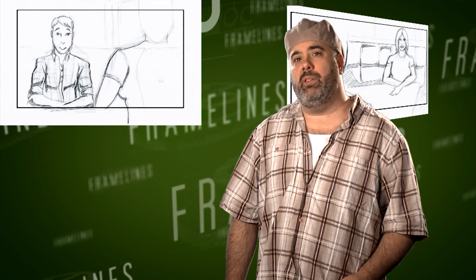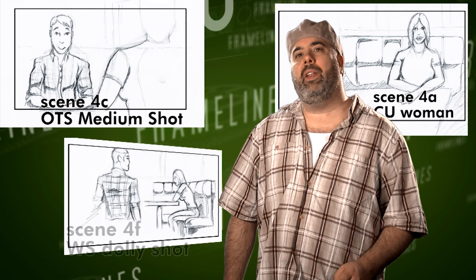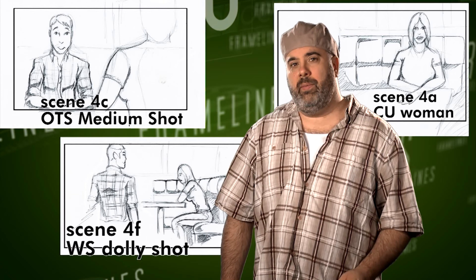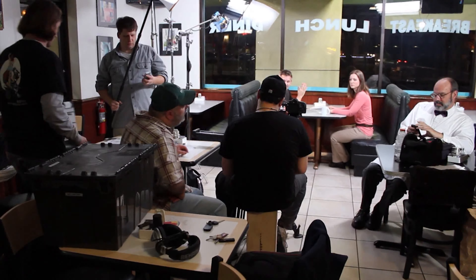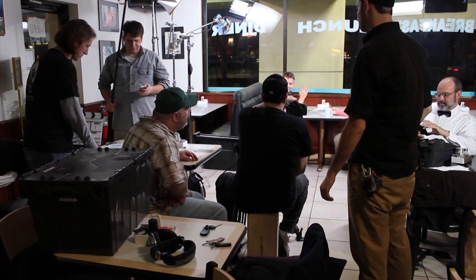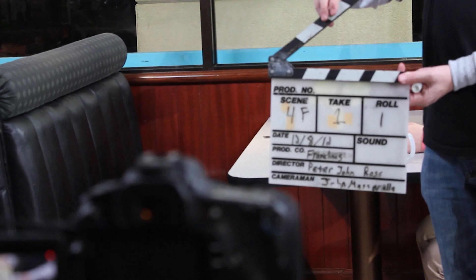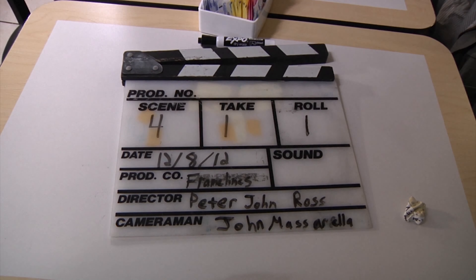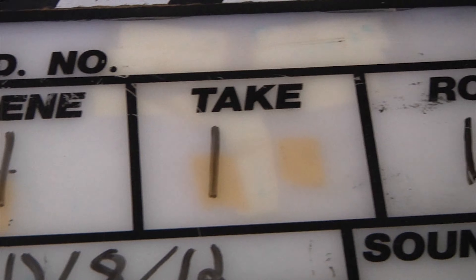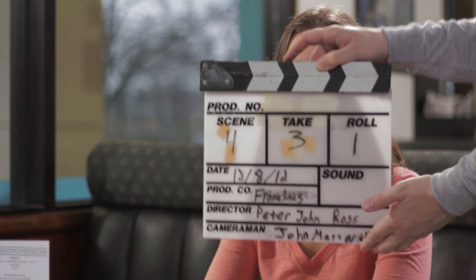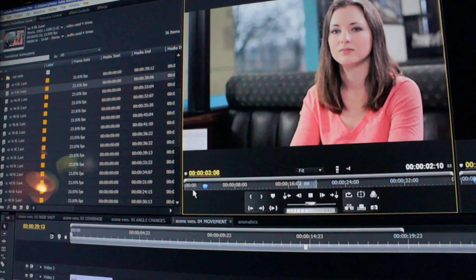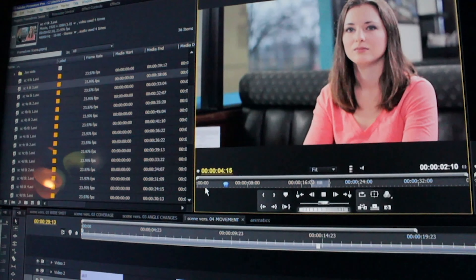You can do storyboards too. For each scene, you'll want to write out the shot name, then what type of shot you want to get. When you get to production, you can use that shot list and your storyboards, and those will be used on the slate marker. After the shoot, when it comes to editing, the assistant editor will name the computer files the same as what was on the slate.